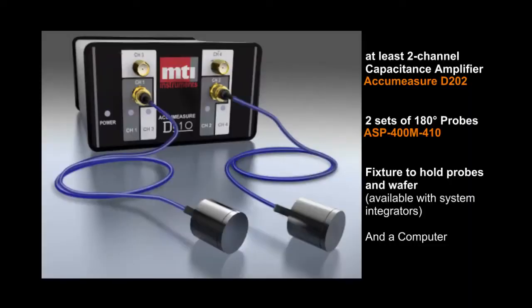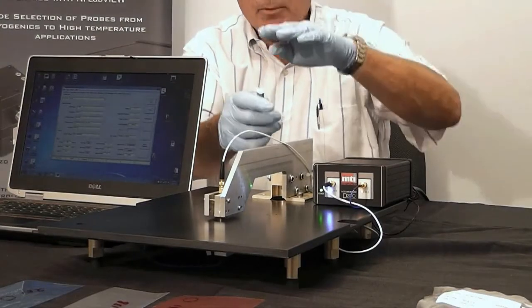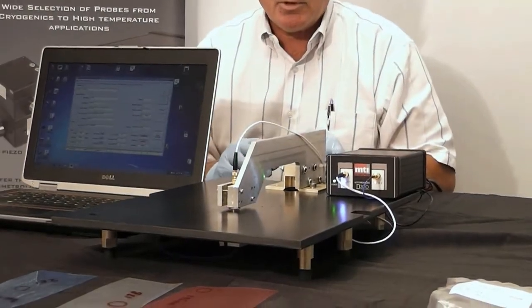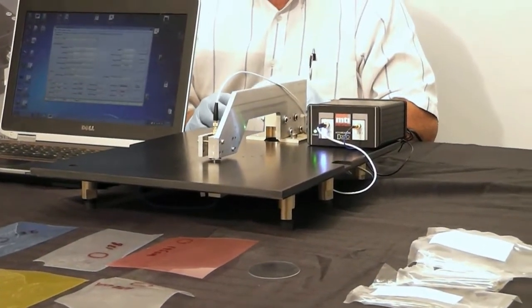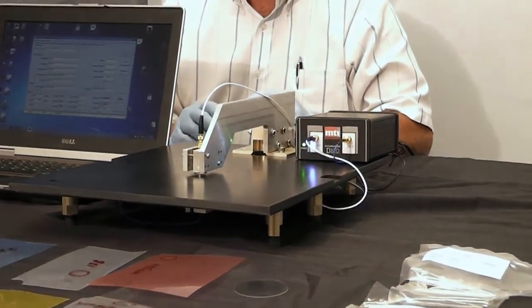The components that we have here that you need are the digital acumeasure, which is a capacitance amplifier, it's two channels. Then we need two probes, which we have here are shorter, and we need a fixture to hold the two probes so that they're facing each other and we can put our targets in between the two probes. It needs to be a fairly rigid fixture and this is something you can build yourself or have a system integrator built for you.